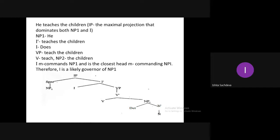Both I (INFL) and NP1 come from the same maximal projection IP. M-command states that if both come from the same lowest maximal projection — here IP — then X can m-command Y, where X is INFL and Y is the noun phrase. In c-command, the aunt commands the niece; in m-command, the niece commands the aunt — that is the key difference. Here I is a daughter of I-bar, which is a sister to NP1.